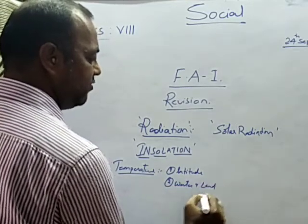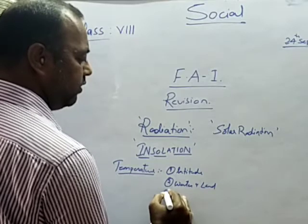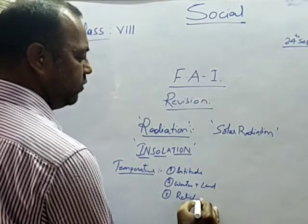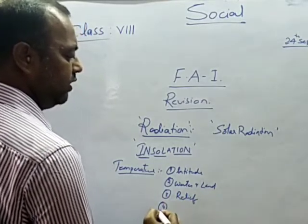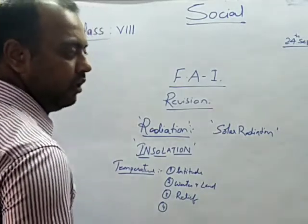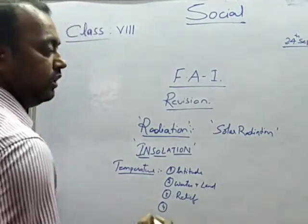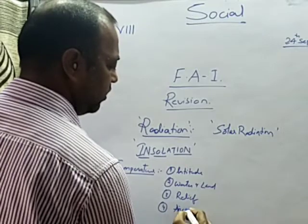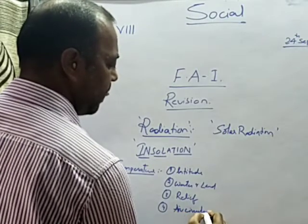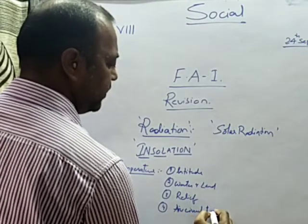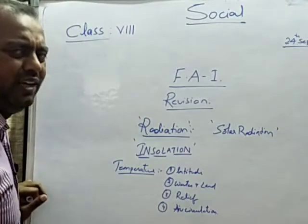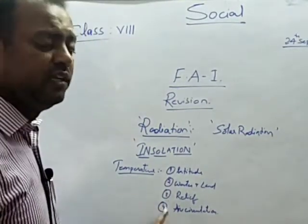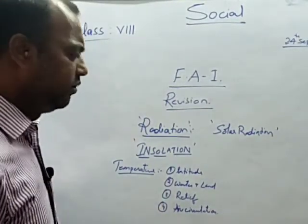The third factor is relief — the height — which we take into consideration. The fourth one is air circulation, which also causes a change in the temperature of a place. So the four factors are: latitude, water and land distribution, relief, and air circulation.